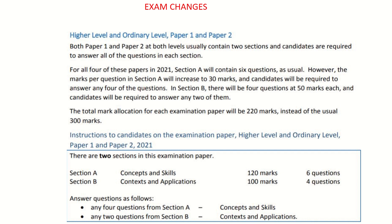This screen outlines some of the exam paper changes in maths at higher and ordinary level. Previously, at both ordinary and higher, you had to complete all questions in your exam paper — you were never given a choice, whereas now we do.